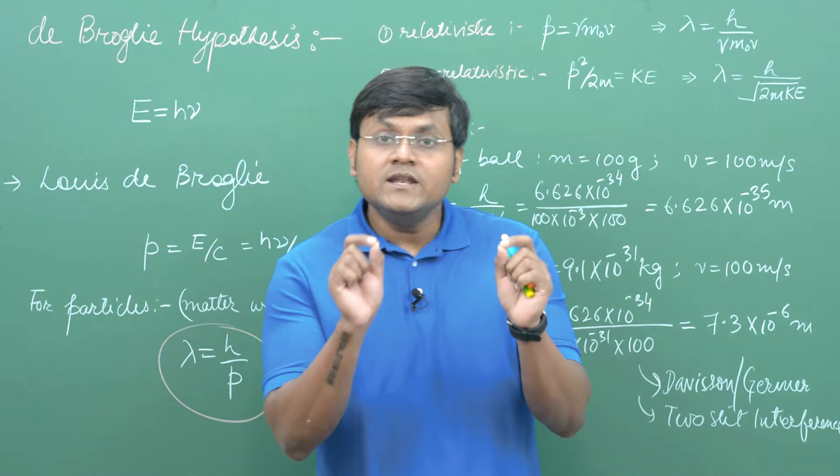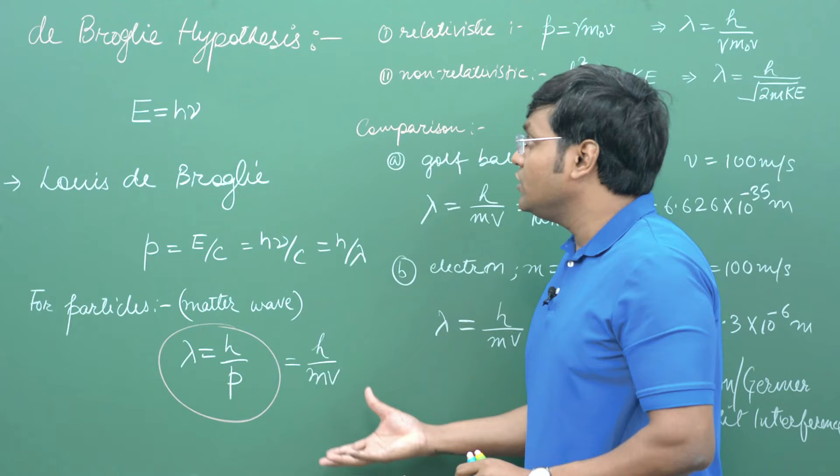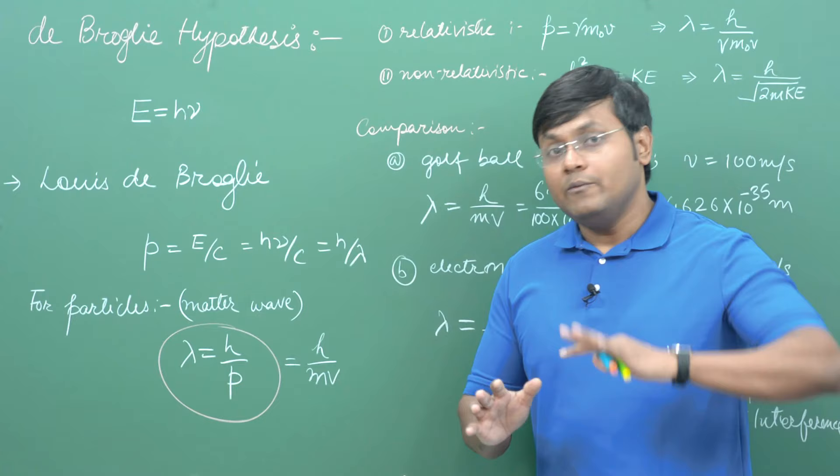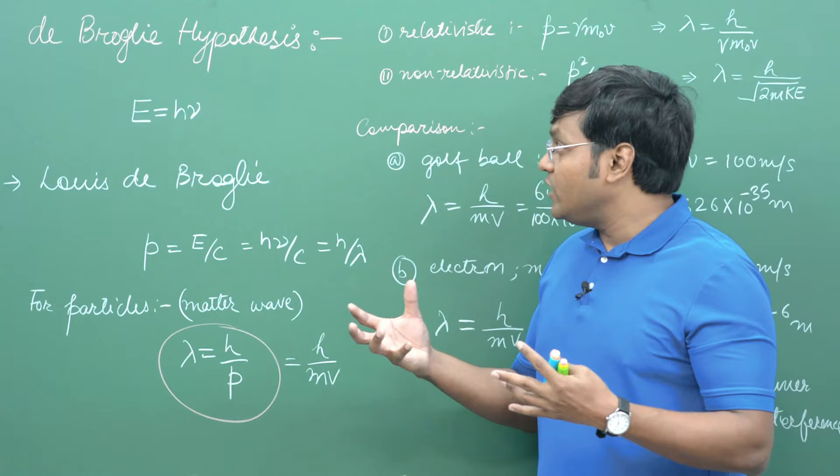This dual nature of electrons is our starting point for quantum mechanics. One of the fundamental equations in quantum mechanics is the Schrödinger equation, and Schrödinger himself said that when he was formulating his equation, he took inspiration from the de Broglie hypothesis.